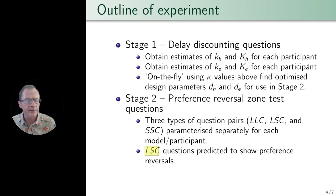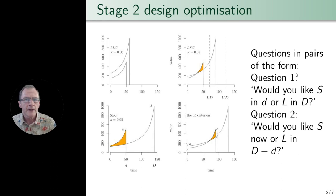Let's have a look at the design of these stage two questions. Look at the form of the questions used on the right hand side. We've got question pairs. Question one: Would you like S in d or L in big D? So S is the value of the small reward, little d is the delay to the small reward, L is the value of the large reward, and big D is the delay to the large reward. Then we ask, would you like S now or L in D minus d? What we're effectively doing here is for question one, the participant is standing at t equals zero, and for question two, the participant is effectively standing on this particular illustration at t equals to 50.